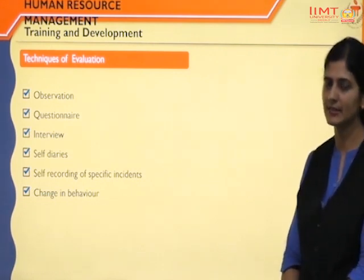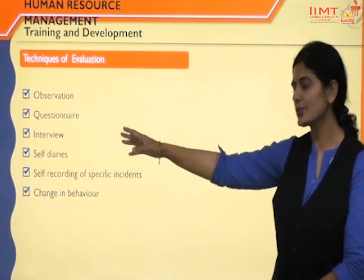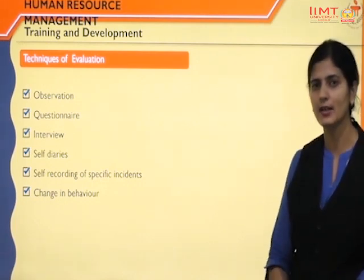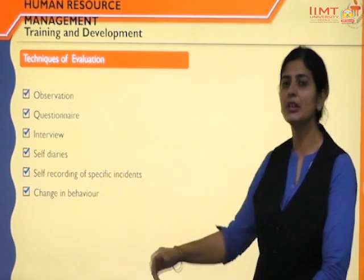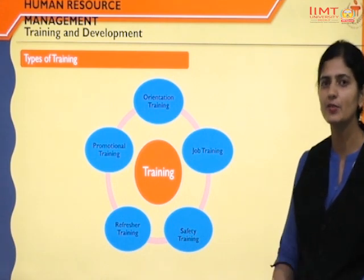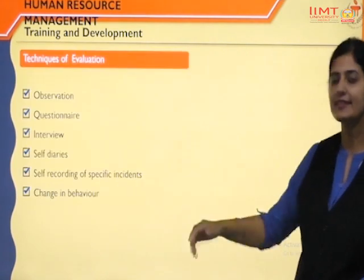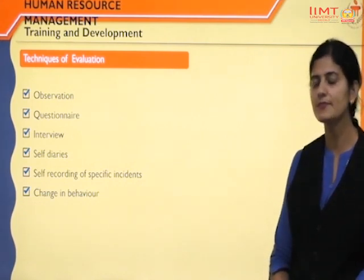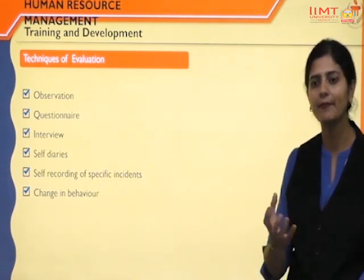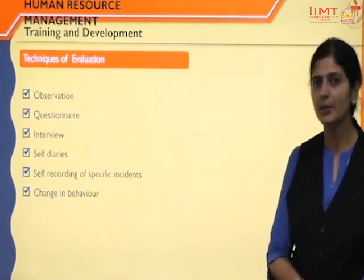Evaluation of training can be done by various techniques. For training programs evaluation, we use the observation method — direct observation can be done. Next, the questionnaire method — employees can be given a series of questions, training-related questions are asked and they have to answer. Next, an interview can be conducted with face-to-face interaction, and their responses are recorded to evaluate the success of the training program. Next, self-diaries — employees present their self-regard and make a list of improvements after the training program. Finally, change in behavior is noticed by the individual employee as well as other employees in the organization.